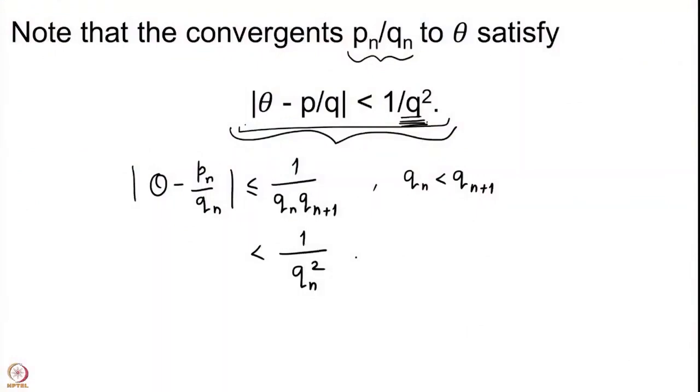In fact we will later prove that convergents are the best approximations to theta. Specifically, with some additional condition on the inequality — strengthening the 1/q² bound slightly — any rational satisfying such an inequality must itself be a convergent of theta. So what we have proved is that convergents give good approximations to theta, and we will prove they are the best. This will be shown in later lectures.